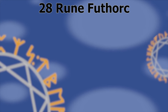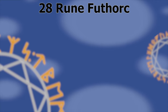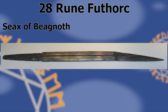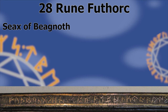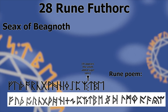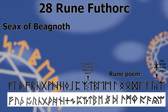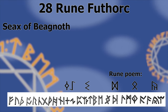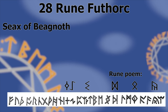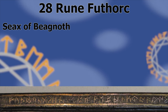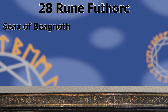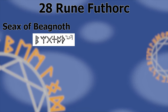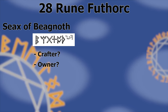A 28-rune Futhork is attested in a few places. The most interesting is the Seax of Beagnoth, a sword found in the Thames River dating from around the 10th century. The order is different to the Old English rune poem — the first 19 runes are in the same order, but thereafter it differs, and some rune forms are different. This could be because the craftsman didn't know his Futhork, or it may mean that the Futhork wasn't standardised, or it could be errors from inlaying runes in metal. We can't be sure. The blade's name comes from its other runic inscription reading Beagnoth in six runes, though we don't know if this is the crafter's name, the owner's, or the blade's itself.